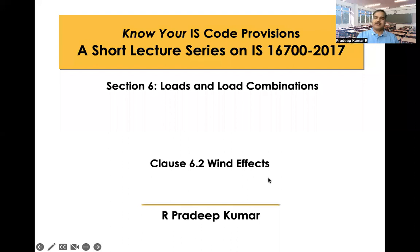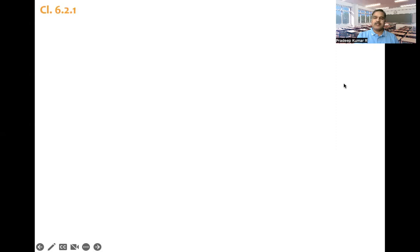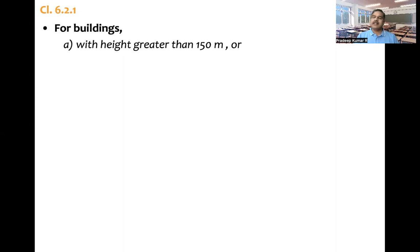Wind effects, clause number 6.2. The code says for buildings with height greater than 150 meters—that is around a 50 story building if we assume each floor height as 3 meters—or with complexities in plan or elevation geometry, especially irregularities in elevation geometry or plan geometry.